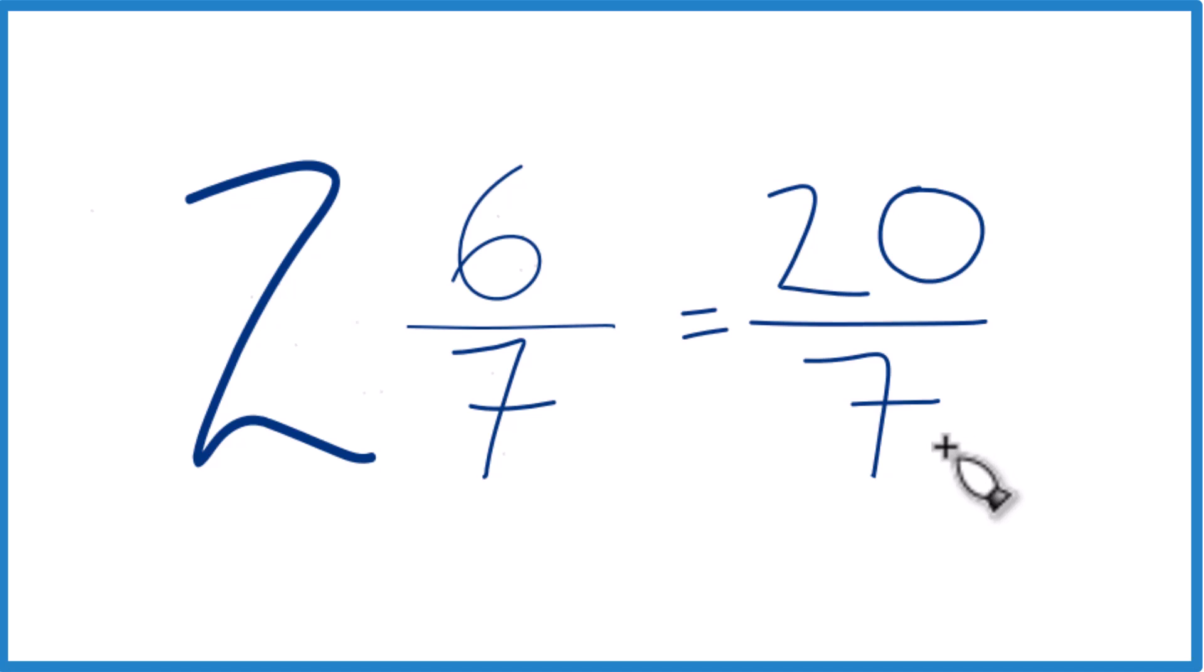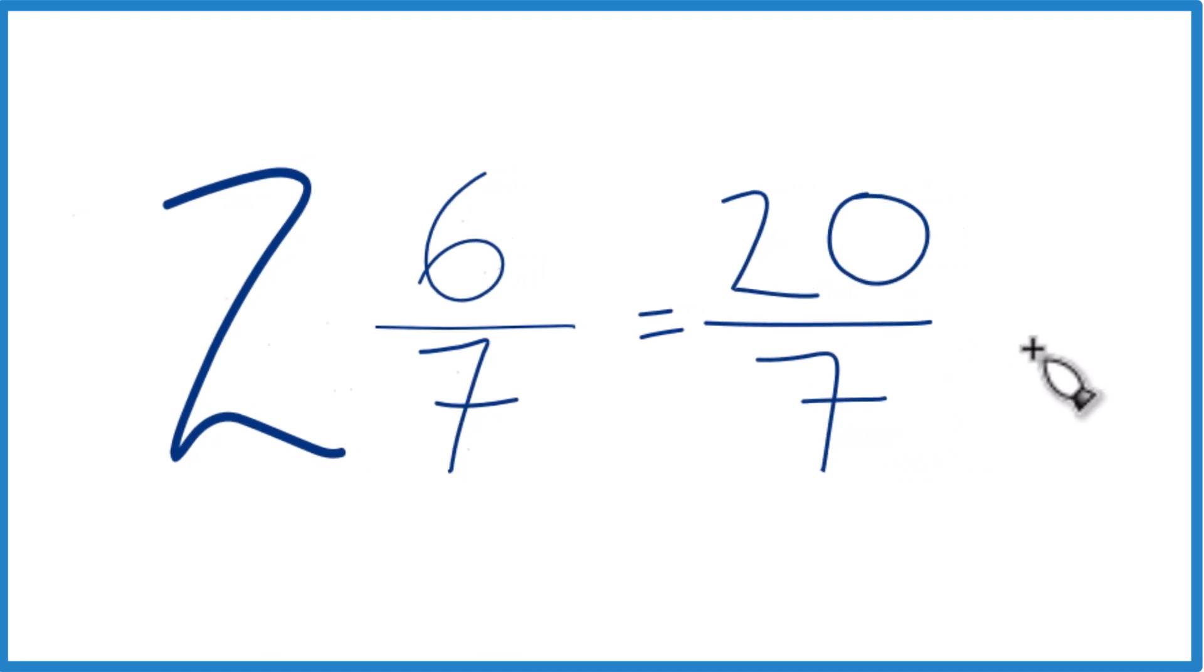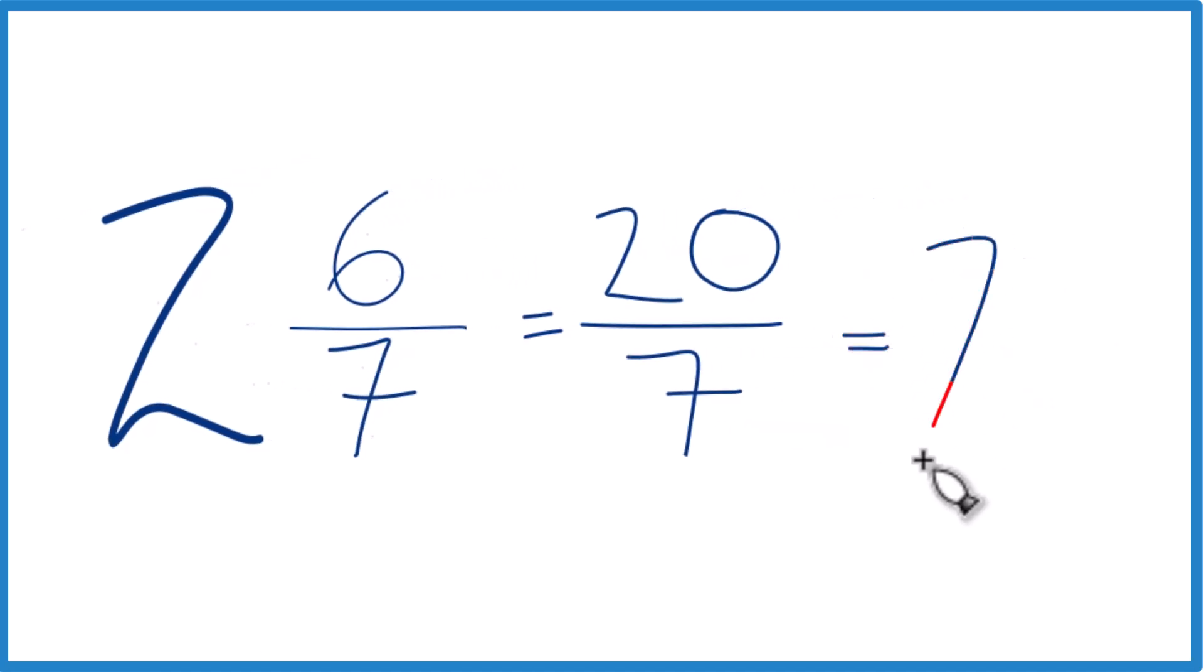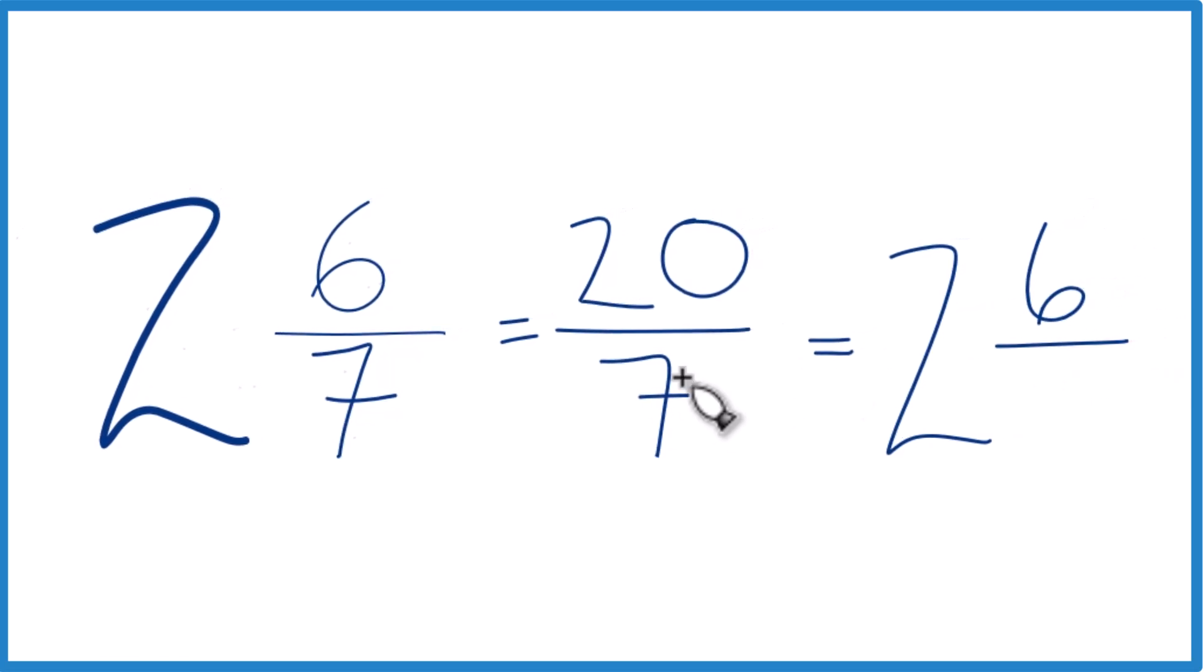And we can check our work, too, because 7 goes into 20, 2 times 7 is 14, with 6 left over. Bring the 7 across. 2 and 6 sevenths, just like we got before.